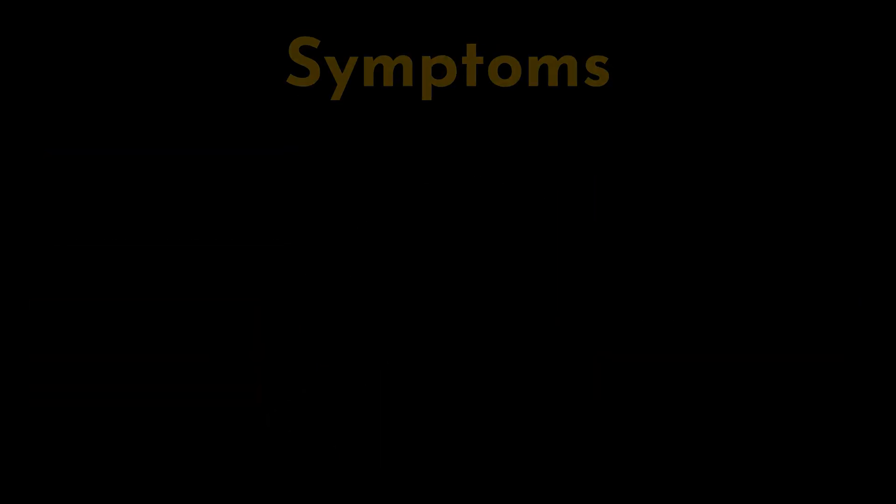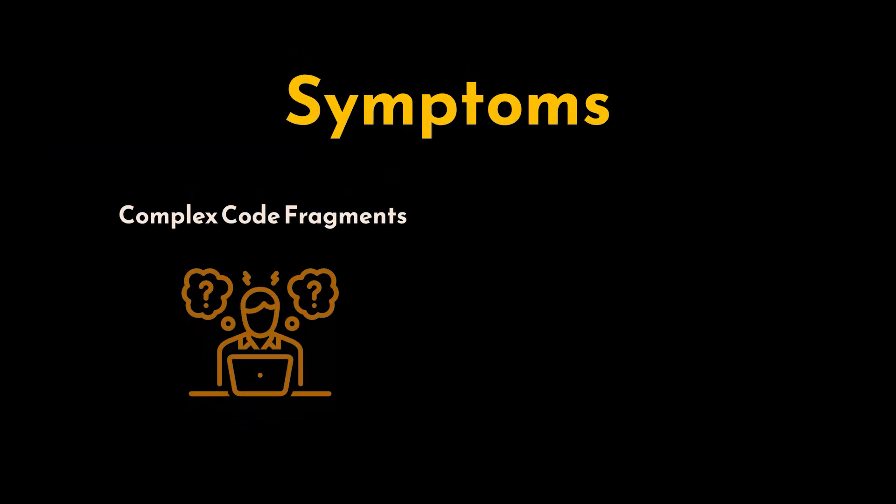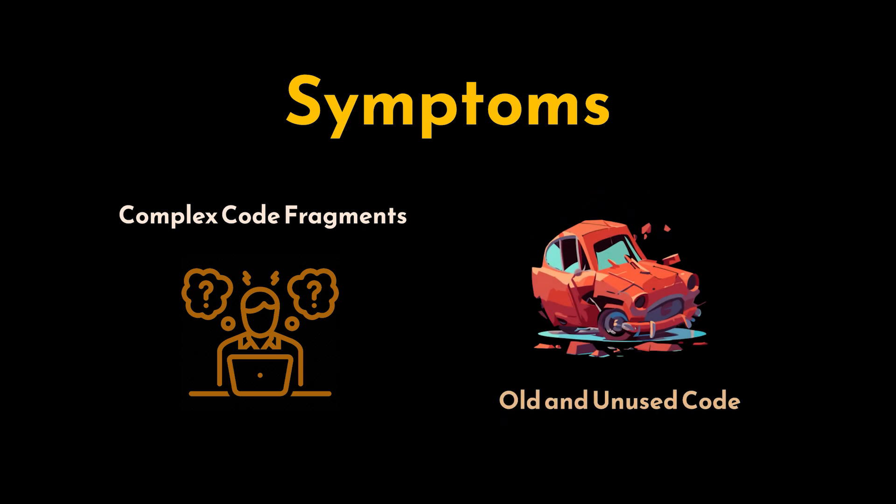One of the main symptoms of lava flow is complex and bloated code fragments, such as unjustifiable variables and complex, important-looking functions, classes, or segments that don't clearly relate to the system architecture. Another way to identify this pattern is the presence of old, unused code or whole blocks of commented-out code with no explanation or documentation.